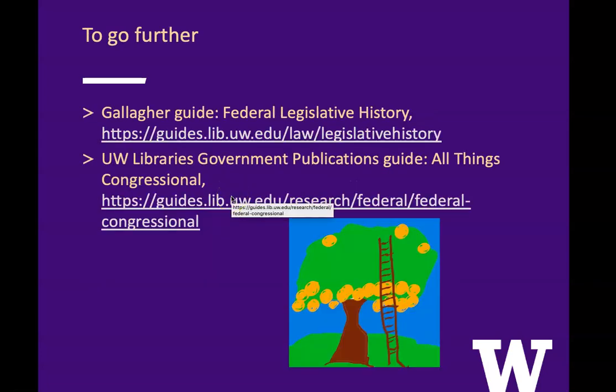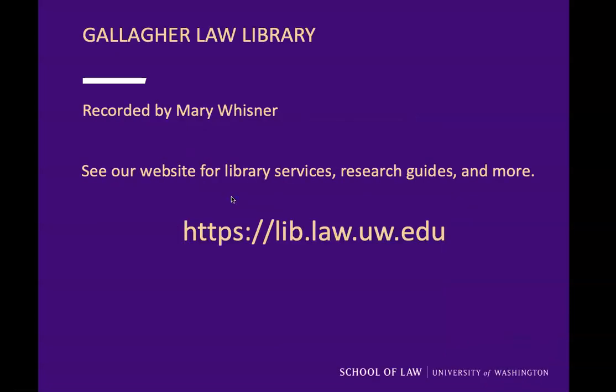Remember, I told you I was only going to show you the low-hanging fruit. If you want to go further, we have a guide called 'Federal Legislative History,' and UW Libraries Government Publications Department has a guide called 'All Things Congressional.' I recommend that you look at those and you will be able to get any of the fruit of legislative history. This has been Mary Wisner from the Gallagher Law Library. Please see our website for library services, research guides, and more. That URL is lib.law.uw.edu.